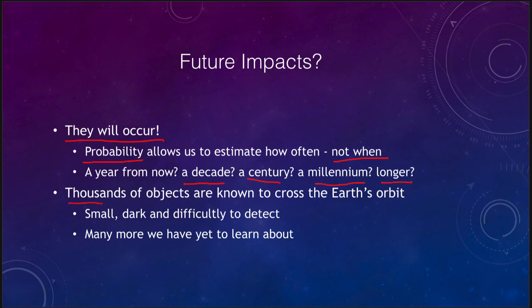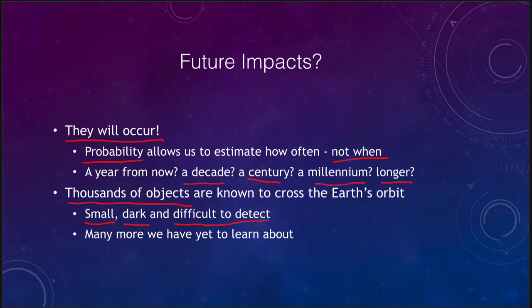There are thousands of known objects that cross the Earth's orbit. The vast majority of these are small, dark, and very difficult to detect — they do not reflect a lot of light and it is very difficult to know about them until they are almost on top of us. It does not take a gigantic object to cause significant damage; something even just a few kilometers across would be a devastating impact. And there are many more objects we have yet to learn about and do not even know of their existence.